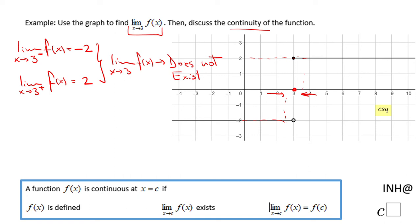The two limits are different, so the limit does not exist. Now we can move to the second part where we discuss continuity. We have three conditions here. First, f(x) is defined at x equals c—in this case, 3. Yes, that's correct. f(3) is defined; it's 2, this point right here.